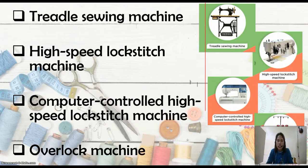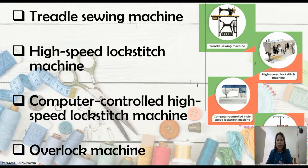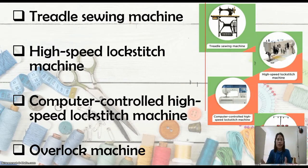The overlock machine, also called a serger or over-edging machine. Once you have finished sewing, we use the overlock to lock the hems so there will be no fraying. Some fabrics, if not overlock stitched, will unravel — like a sack where pulling one thread causes others to follow. So we need to use the overlock machine to lock the edges of the fabric or garment.